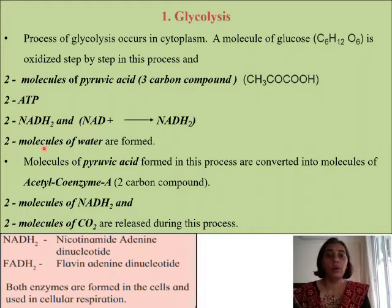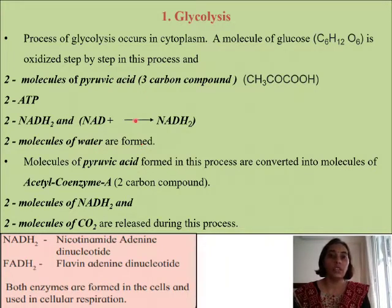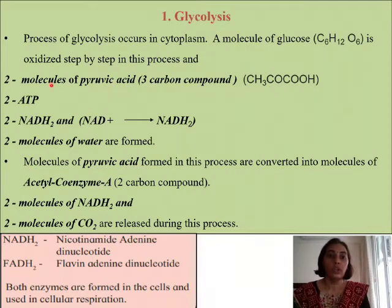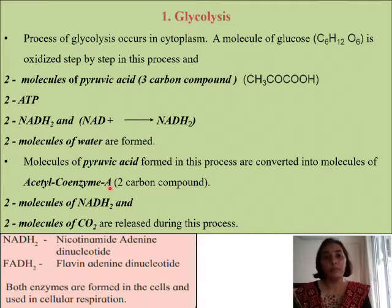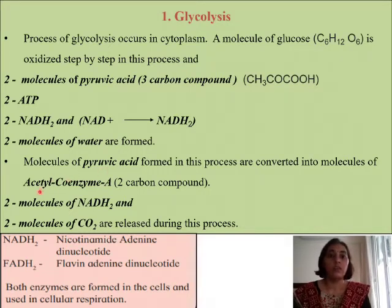Along with this, you also get two molecules of water. So that is what happens in the first step of glycolysis. In the next step, the molecules of pyruvic acid — we had got two molecules of pyruvic acid — are converted into molecules of acetyl coenzyme A. These coenzymes are also helpful in bringing about cellular respiration, so pyruvic acid is getting converted into acetyl coenzyme A.